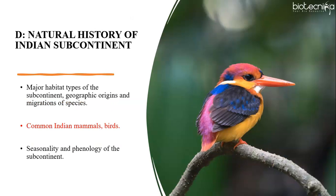Subunit D is about the natural history of the Indian subcontinent. From this subunit, only one topic is very, very important: common Indian mammals and birds. Although you also study major habitat types of the subcontinent, geographical origins and migrations of species, and seasonality and phenology, questions are frequently asked on common Indian mammals and birds — for example, identifying which two of the seven endemic bird areas are located in the country, with options like the Western Himalayas, Indo-Gangetic plain, Eastern Himalayas, or Assam plains.